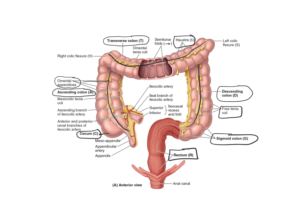Where the colon bends we have the right colic flexure — where the ascending colon bends to create the transverse colon. Then the transverse colon bends again to become the descending colon, and that is the left colic flexure. There is no name where the descending colon turns to become the sigmoid colon, or where the sigmoid colon turns to become the rectum. The rectum then leads into the anal canal.